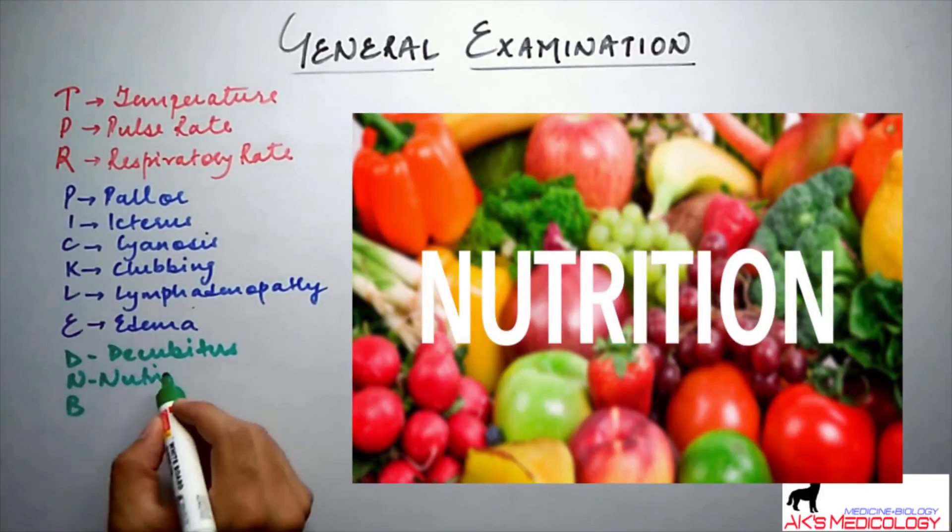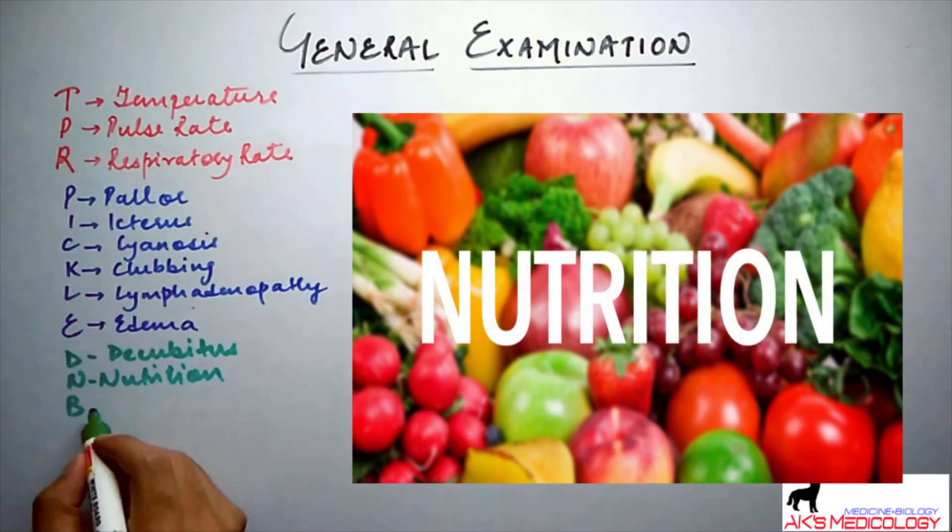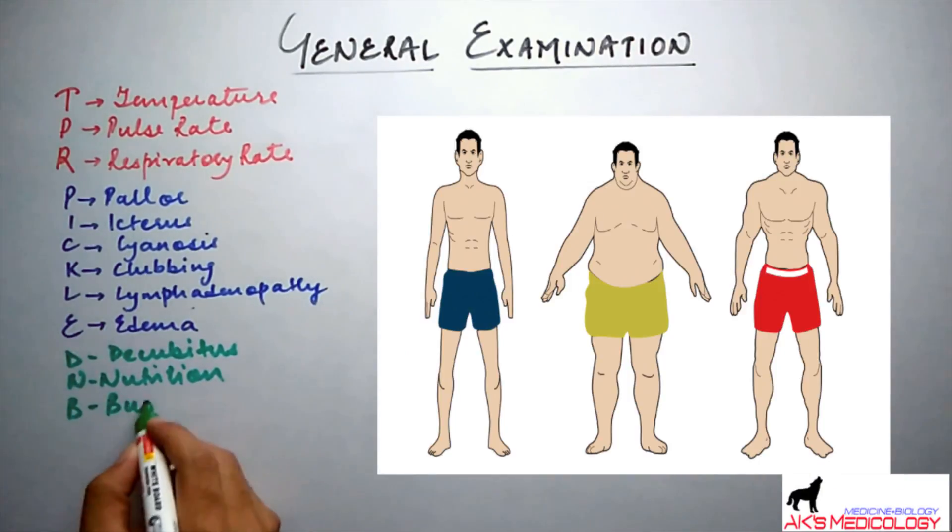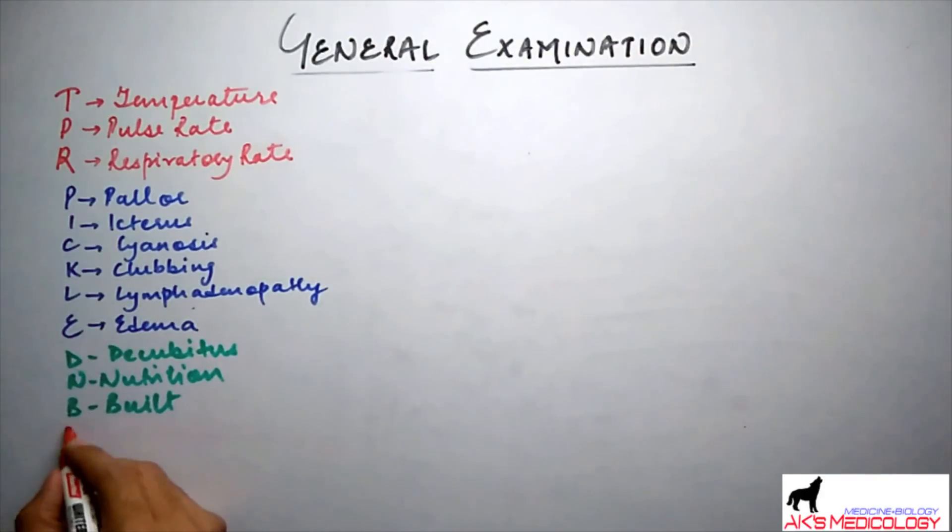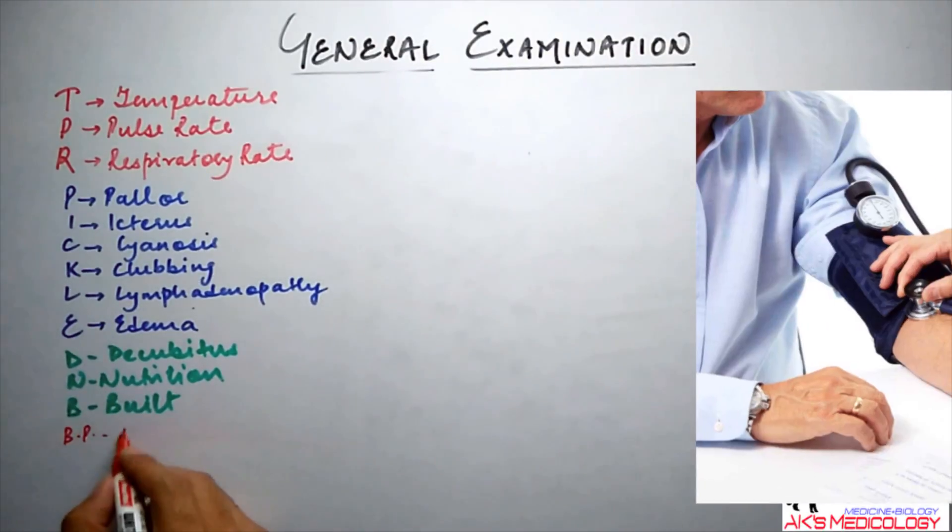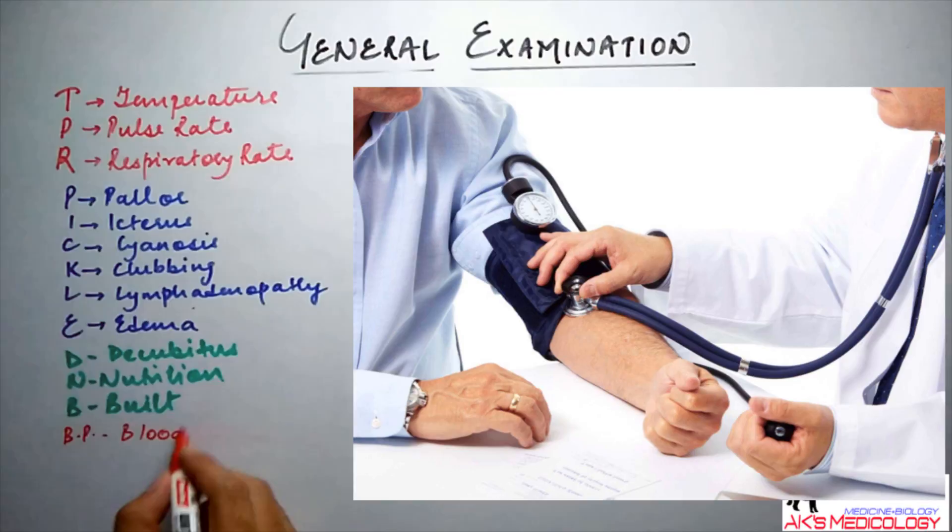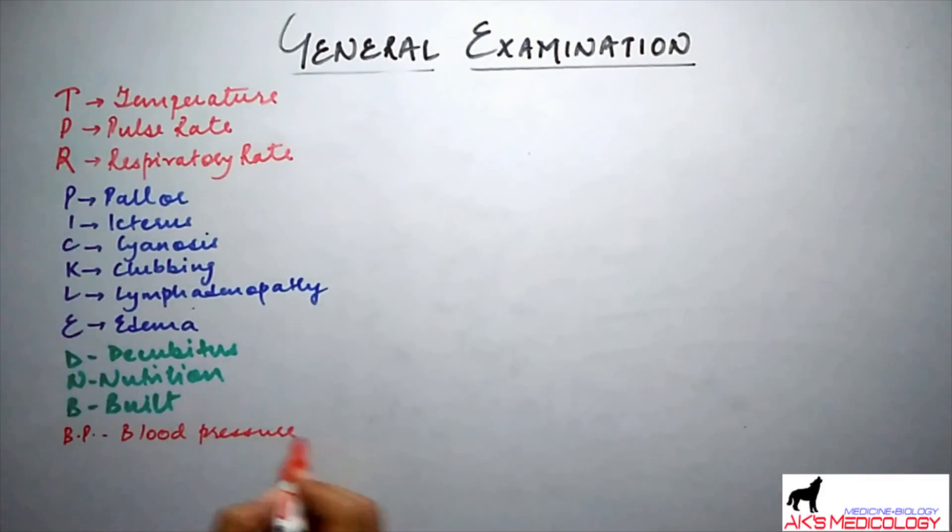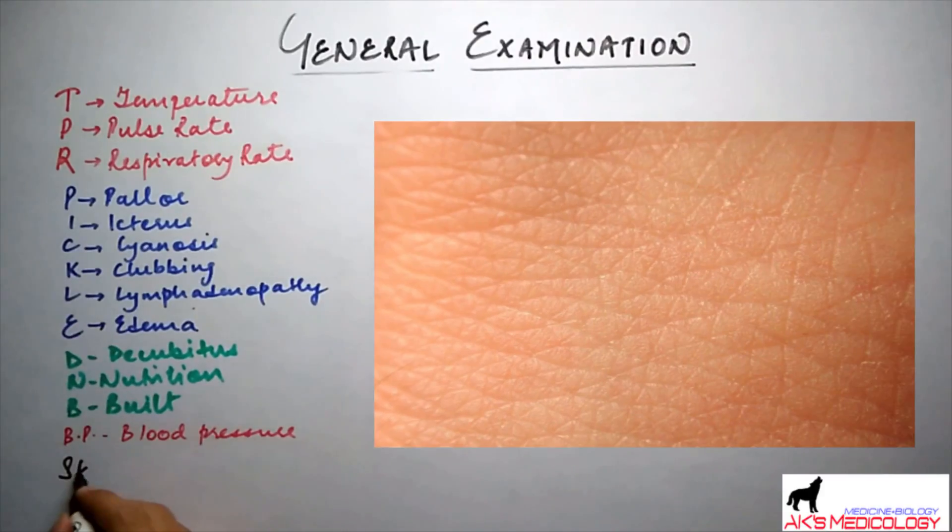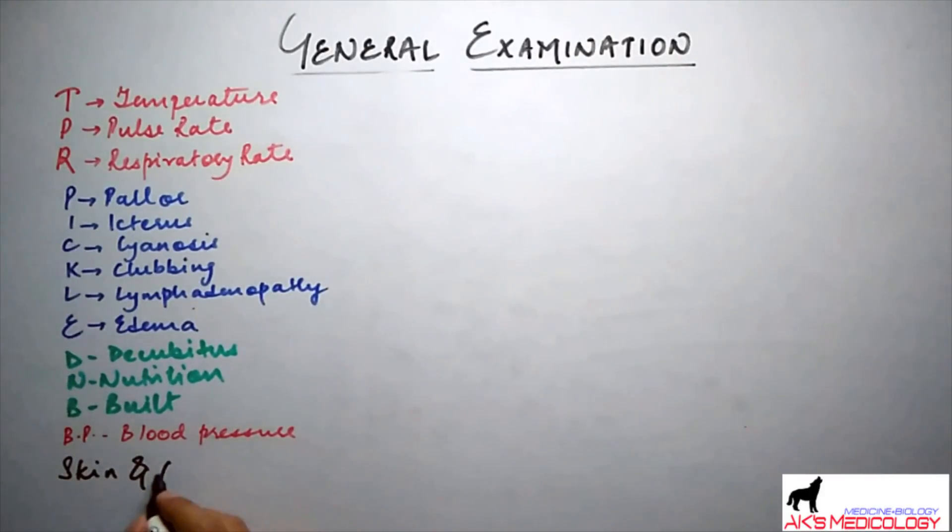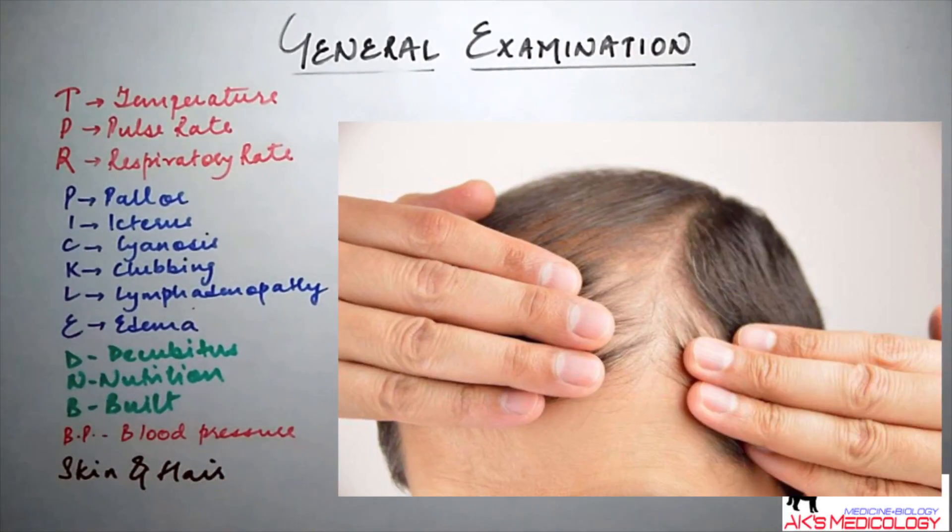N stands for the nutrition of the patient and B stands for the built of the patient. Besides these, blood pressure of the patient should also be taken to rule out hypotensive or hypertensive state, and at last skin and hair of the patient could also be examined to rule out specific illnesses.